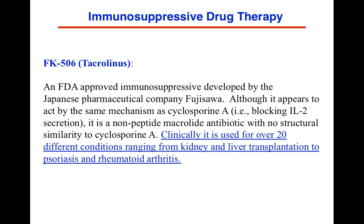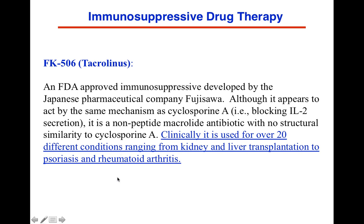The next one is FK506, or tacrolimus. This is a very important immunosuppressive drug that appears to go through the same mechanism as cyclosporine. However, it is a non-peptidic macrolid antibiotic with no structural similarity to cyclosporine A, which is interesting. It's used for kidney and liver transplantation as well as some autoimmune diseases like psoriasis and rheumatoid arthritis, though you have to be careful.